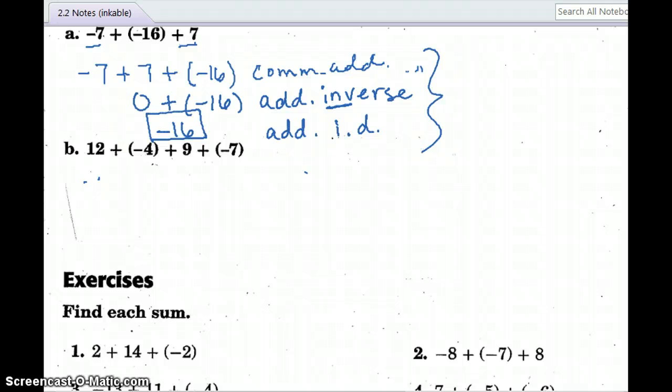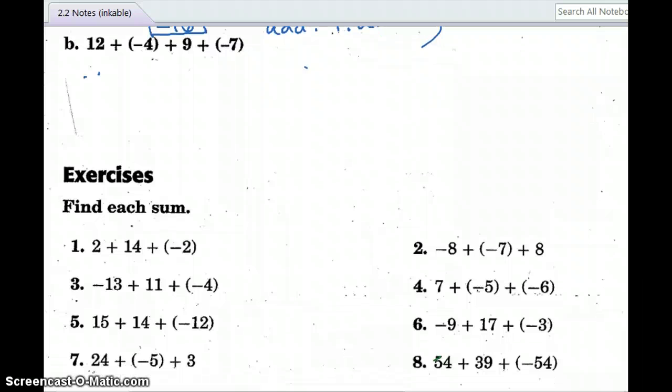Now I just wanted you to show we are using all of these properties we've learned in class so far. Let's look at example B. Sometimes we do these properties we don't even realize we're doing them. The first thing I see that I want to do is get my positives together and my negatives together. So let's rearrange the negative 4 and the 9. The commutative property allows me to say 9 plus negative 4 plus negative 7.